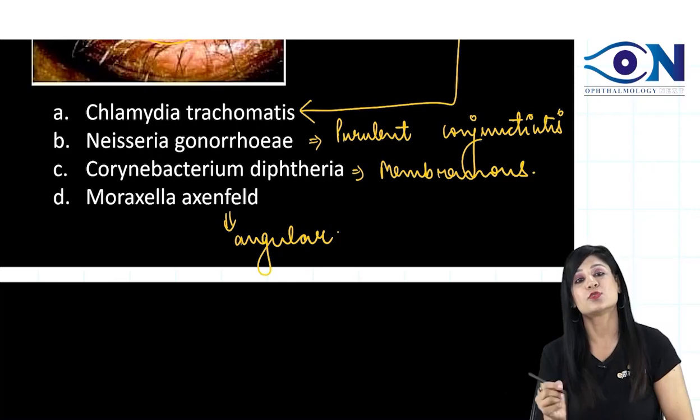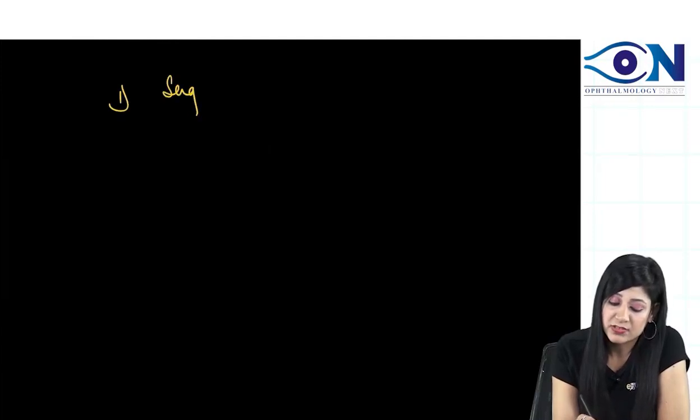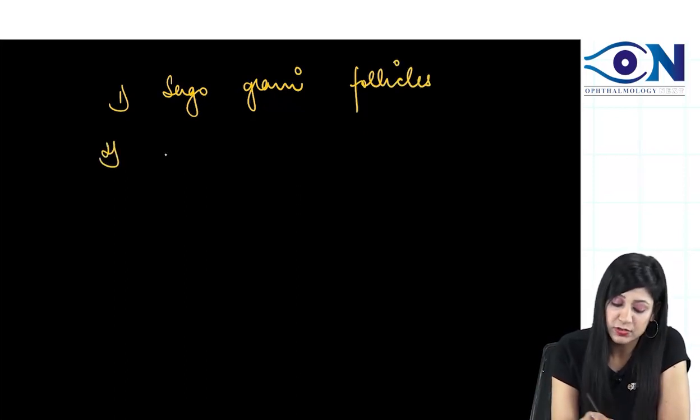By diagnosis of exclusion also, your answer is Chlamydia trachomatis. What are the other important things that you get here? One is the Sago grain follicles.